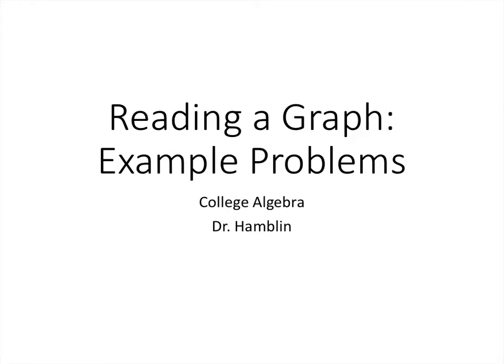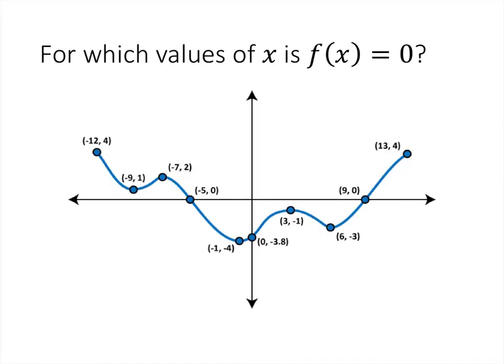Hey folks, another quick video here with a couple of practice problems on how to read a graph. So if we have a function that's given graphically like this, we might be asked for which values of x is f of x equal to 0. Remember that when we say f of x, that's just another way of talking about y. So we're looking at the points on this graph and asking ourselves, when does the y equal 0?